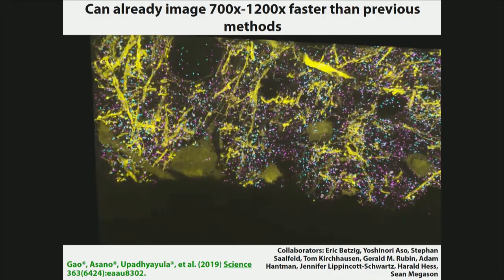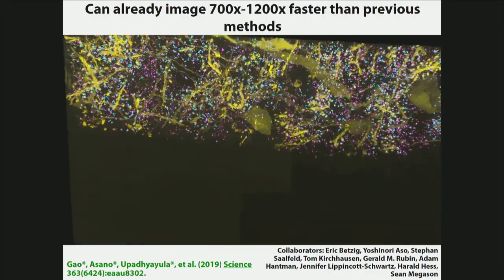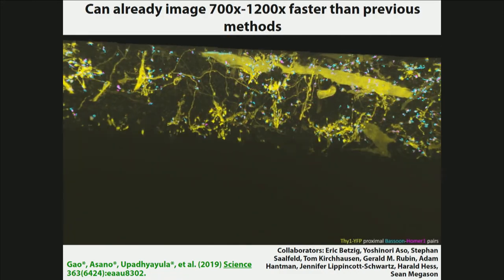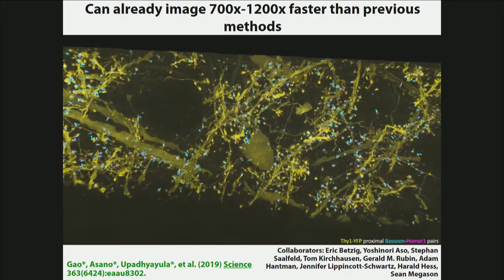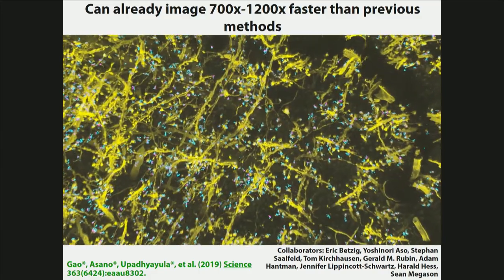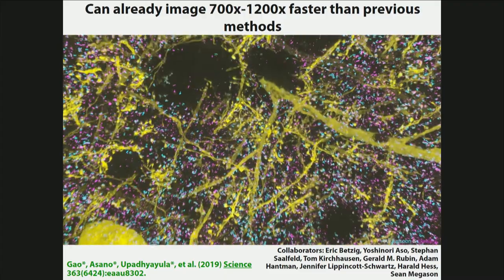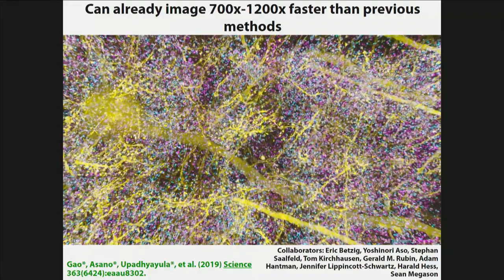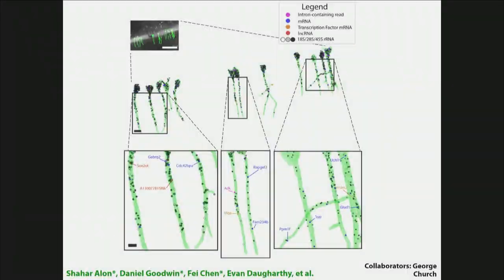We recently collaborated with Eric Betzig, who won the Nobel Prize for his own work in microscopy, and together we developed a strategy that lets us image about a thousand times faster than the nearest equivalent resolution competing technique. In this picture, yellow is fluorescent proteins filling the cells, while magenta and blue are different proteins involved in neural communication and synaptic exchange of information. We can also bring in sequencing technologies — working with George Church's group, we take a brain, expand it, and sequence the genetic codes right there inside the tissue to map where genes are expressed with extraordinary spatial precision across extended scales.